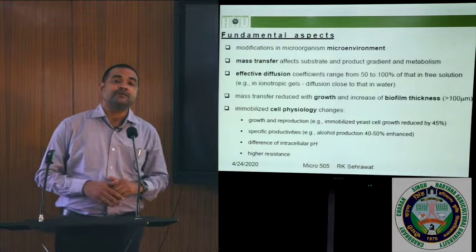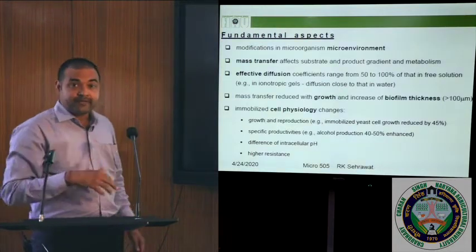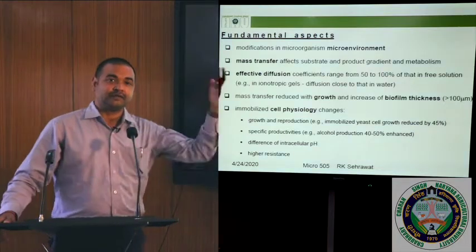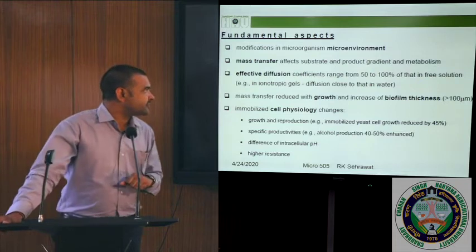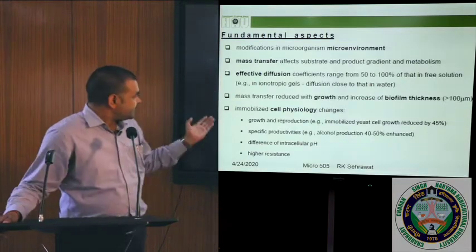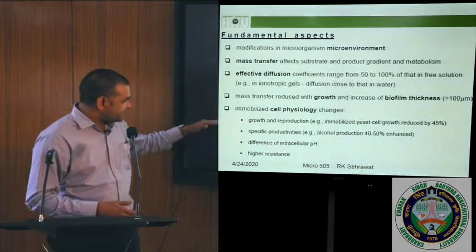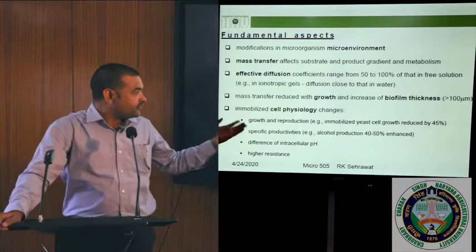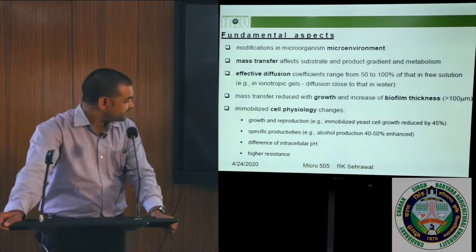A few fundamental aspects related to whole cell immobilization: there is change in the microenvironment of microorganisms, so they may behave differently. Mass transfer affects substrate and product formation — it can lead to enhanced production or suppression, so we have to optimize for maximum production. The effective diffusion coefficient ranges from 50 to 100% of all free solutions; in ionotropic gels there is diffusion close to that in water. Mass transfer reduces with growth and increased biofilm thickness. Whole cell immobilization of Saccharomyces cerevisiae can increase alcohol production by 40 to 50%.